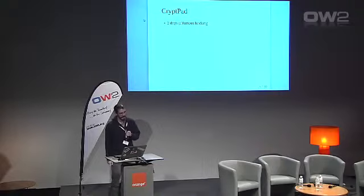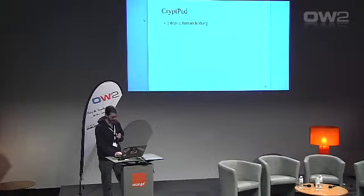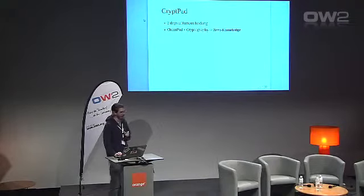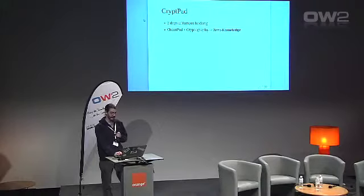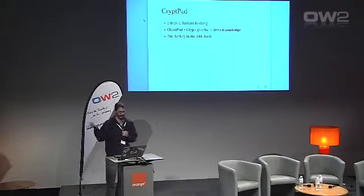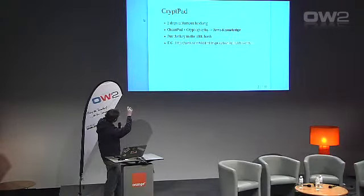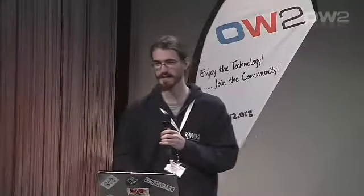Very little server code is needed. In two days of furious hacking, I decided I wanted to make the zero-knowledge promise a reality. I took ChainPad and bolted on standard cryptography, putting the encryption key into the URL hash. Everything after the pound sign is never sent to the server. The server sees nothing, knows nothing, and that key can be used to decrypt the content stored on the server. I ported the server code from Java to Node.js and the client code from XWiki's WYSIWYG to CKEditor — all in two days.